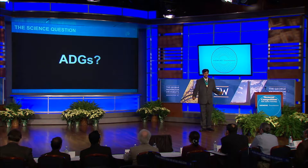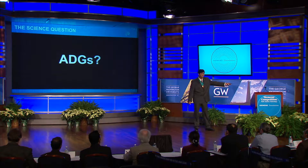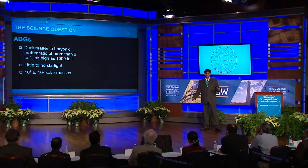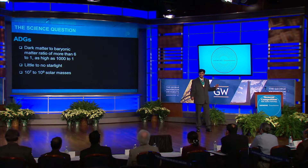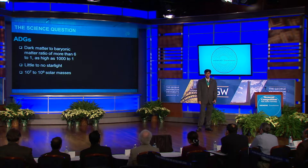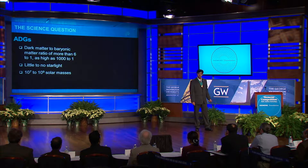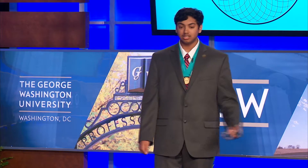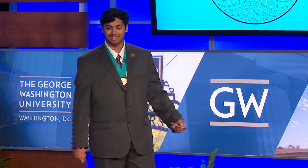Normal matter is the stuff we deal with every day, ranging from this desk to even the Higgs boson. On the other hand, dark matter doesn't interact with anything we know of. Because ADGs are dominated by dark matter, there's little to no starlight coming from them, and this makes them difficult to detect. Most ADGs are dwarf galaxies, meaning they have much fewer stars than normal galaxies and thus generally a lesser mass. While the Milky Way is 10 to the 12 solar masses, ADGs generally range from 10 to the 7 to 10 to the 9 solar masses.